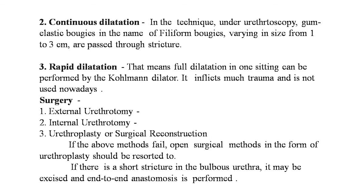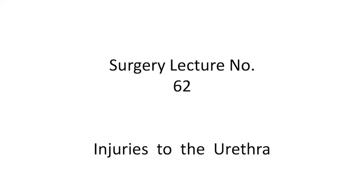Surgery for urethral strictures includes: external urethrotomy, internal urethrotomy by cystoscope, and urethroplasty (surgical reconstruction) if the above methods fail. For a short stricture in the bulbous urethra, it may be excised and end-to-end anastomosis performed. Good videos for external urethrotomy, internal urethrotomy, and urethroplasty are available on YouTube. This concludes surgery lecture number 62 — injuries to the urethra. Thank you.